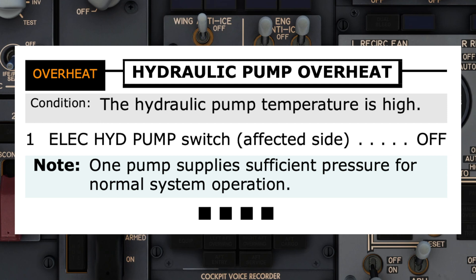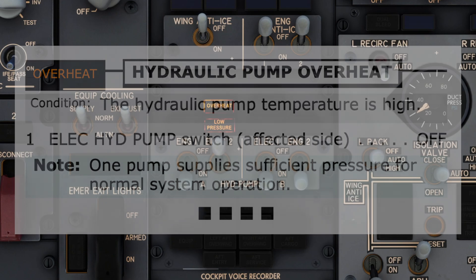Note: one pump supplies sufficient pressure for normal system operation. The four black boxes indicate the checklist has been completed; the pilot monitoring therefore states, 'Hydraulic pump overheat checklist complete.' When the pump was switched off, the low pressure light illuminated — this would be considered associated, as it was a result of the pump being switched off.